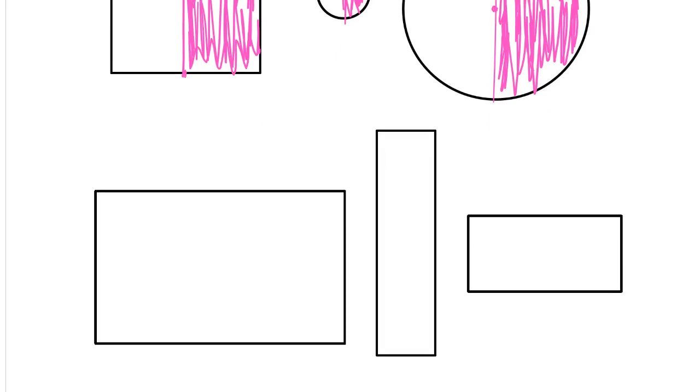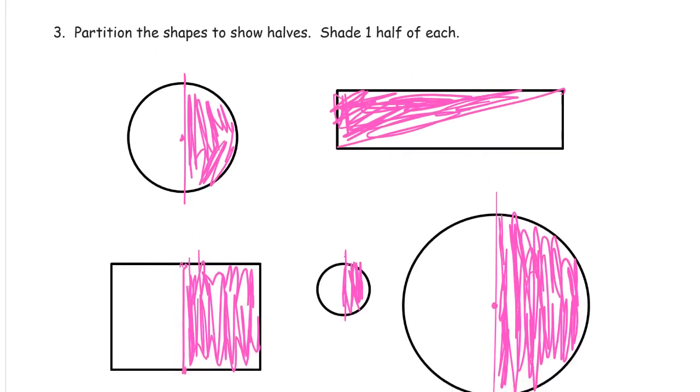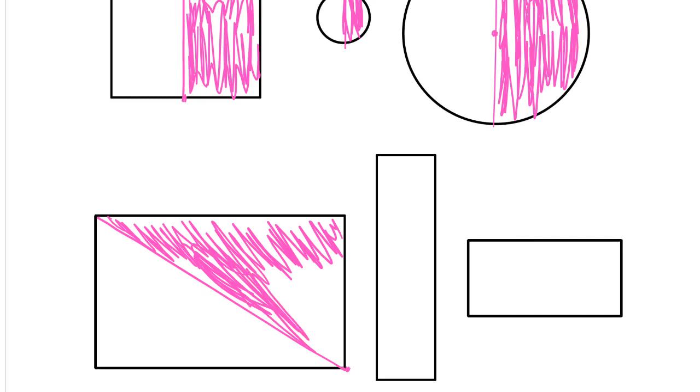Now you can go corner to corner. If you want to do something that looks different, you can make fourths. Now does it say partition the shapes to show halves? Yeah, just keep doing this. There are other ways to do it, as long as you have two equal parts.